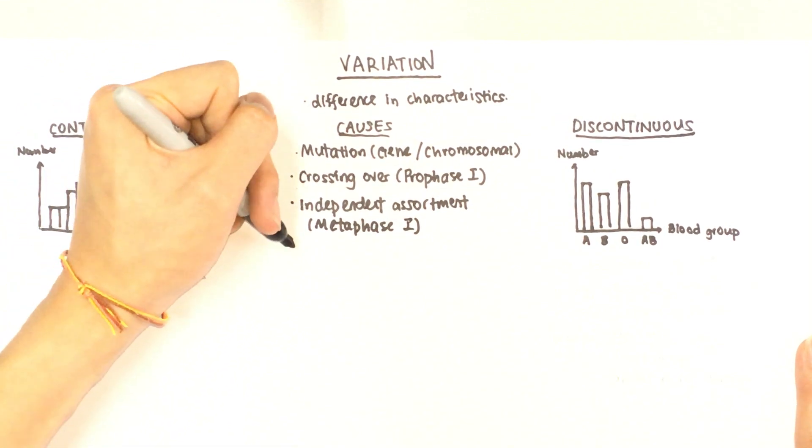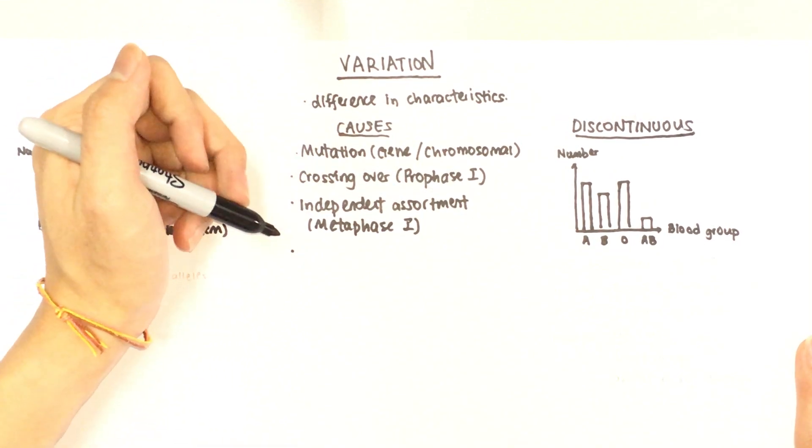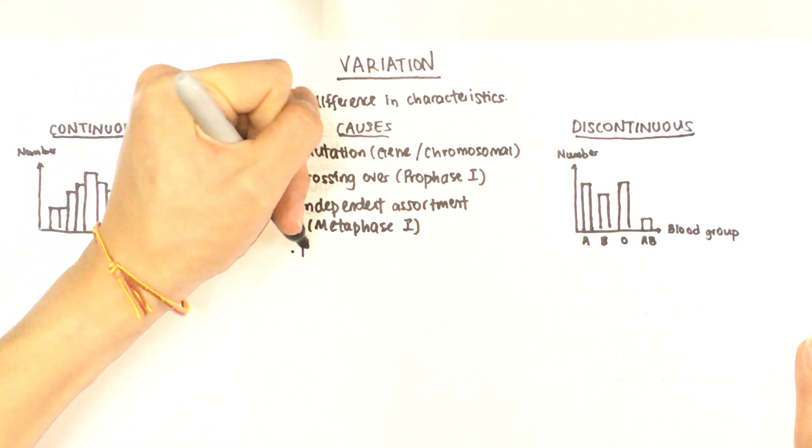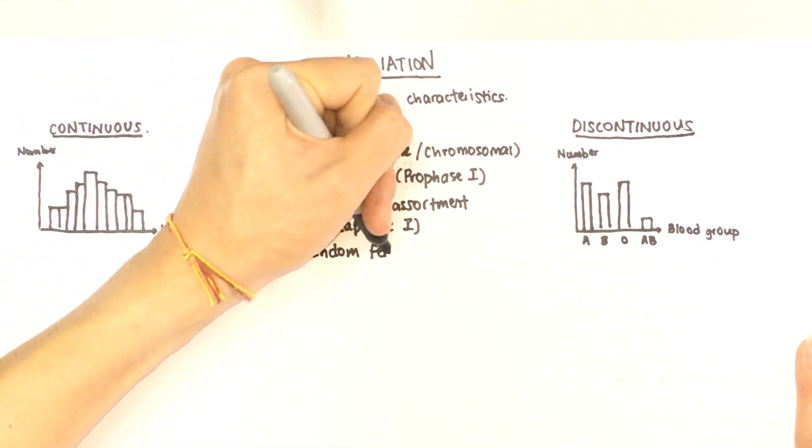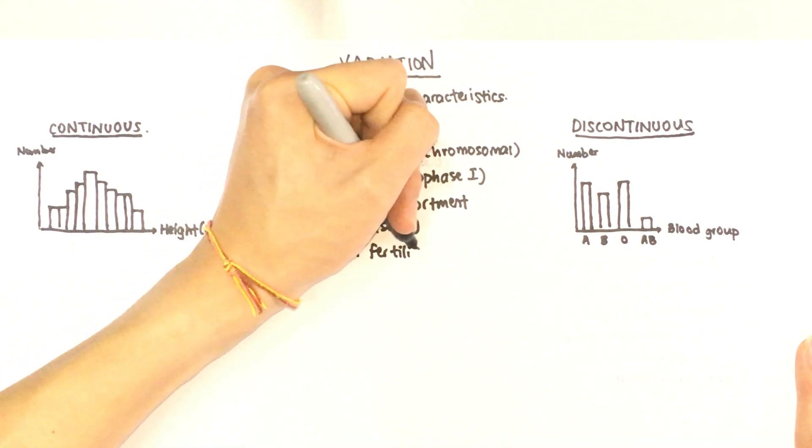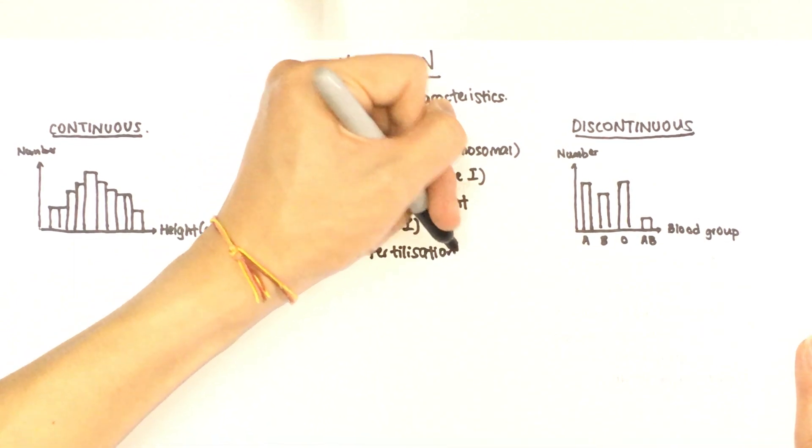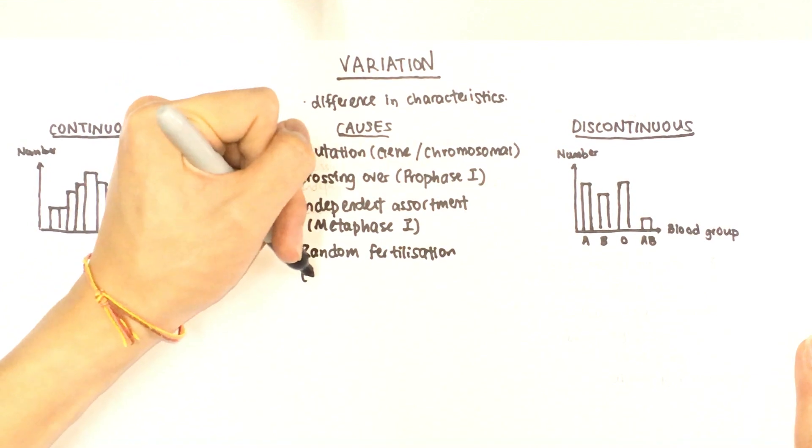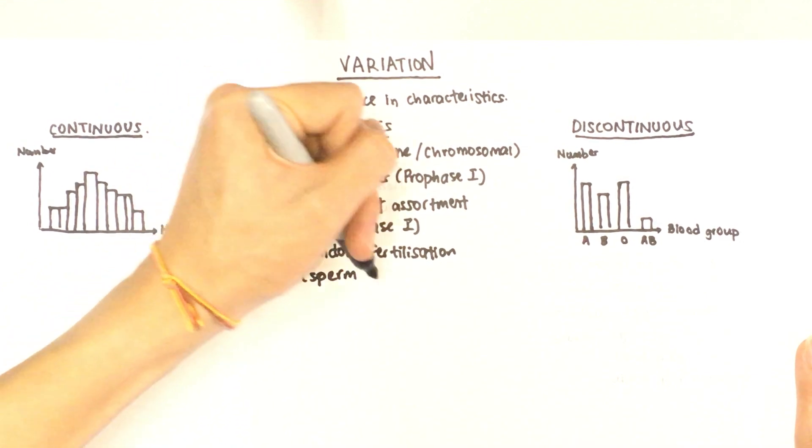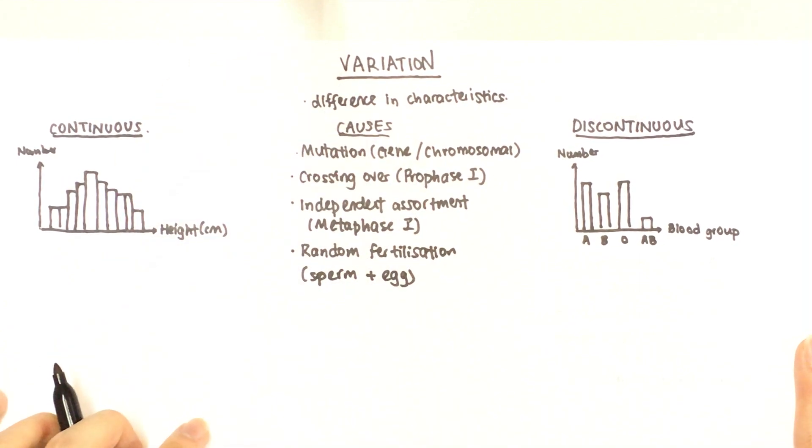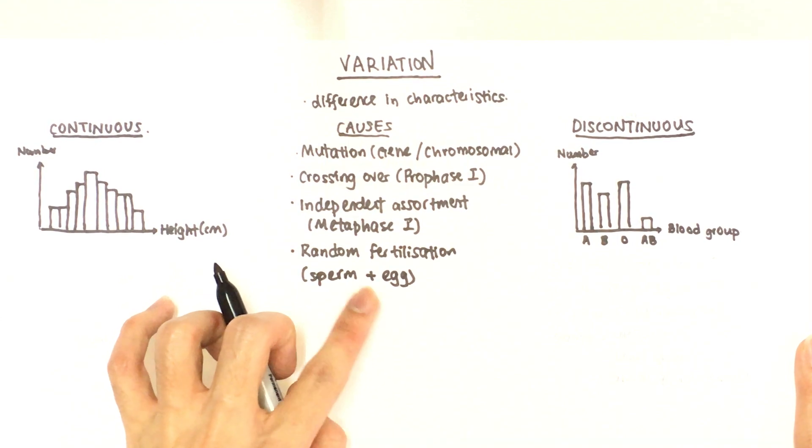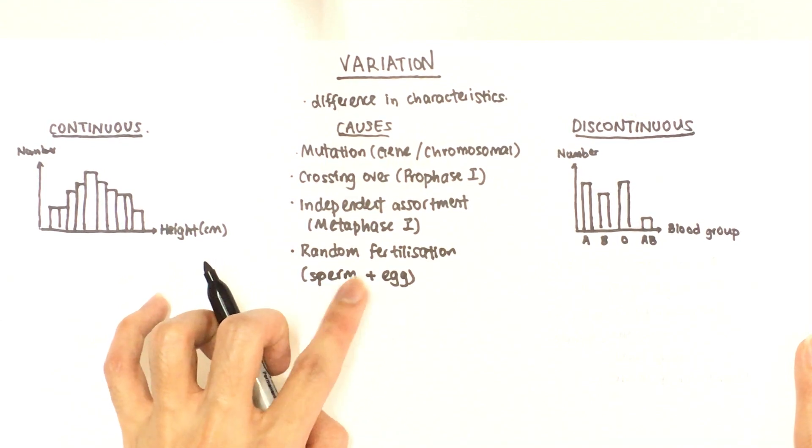Last but not least, the final cause of variation can be due to random fertilization. Now for this, I would assume the context of sperm and egg because we have a lot of sperm cells and females have a lot of egg cells. So there's a lot of chances that different combinations can occur. That gives rise to variation.